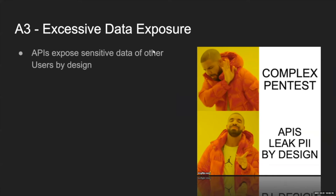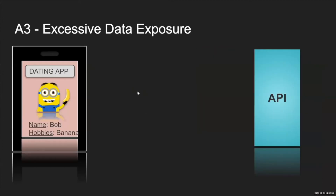Let's talk briefly about number three in the OWASP list: Excessive Data Exposure. I find it to be my favorite vulnerability — as a pen tester you don't need to work really hard. Instead of finding a tricky way to expose information, you just look at the traffic and APIs will just leak PII of other users by design. For example, on a dating app swiping right and left, you see Bob's profile — everything looks public on the screen.